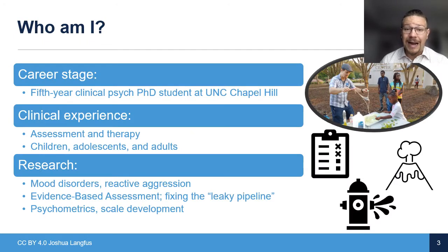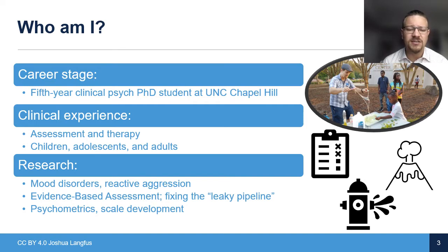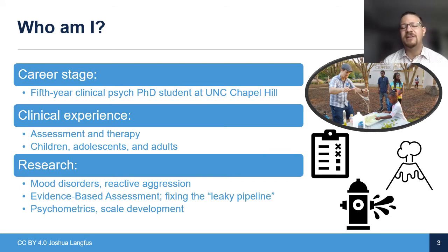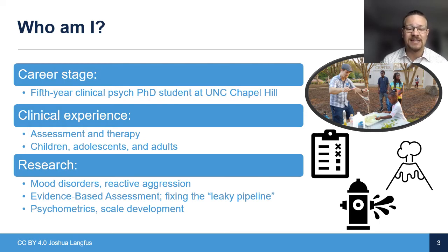Let me tell you a little bit about who I am, because I think that'll be helpful for understanding this work. I'm a fifth-year clinical psych PhD student at UNC. My clinical experience includes a lot of assessment but also therapy. I've worked with children, adolescents, and adults, and my research is really on mood disorders and reactive aggression — distinguishing between the two from an evidence-based assessment lens. My lab also focuses on fixing the leaky pipeline, helping research get to clinicians, particularly through measurement and psychometric scale development, trying to improve the quality of research on free measures so they can compete with ones you have to pay for.